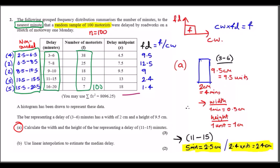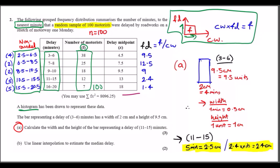Midpoint values are given between each range, which we'll use to find fx later. For the histogram, the general formula is: frequency equals class width times frequency density. The class widths come from the non-rounded values. For example, if the width is 4 and the frequency is 38, then frequency density equals 38 over 4, which gives 9.5. Similarly, 25 divided by 2 gives 12.5, and so on for the rest.